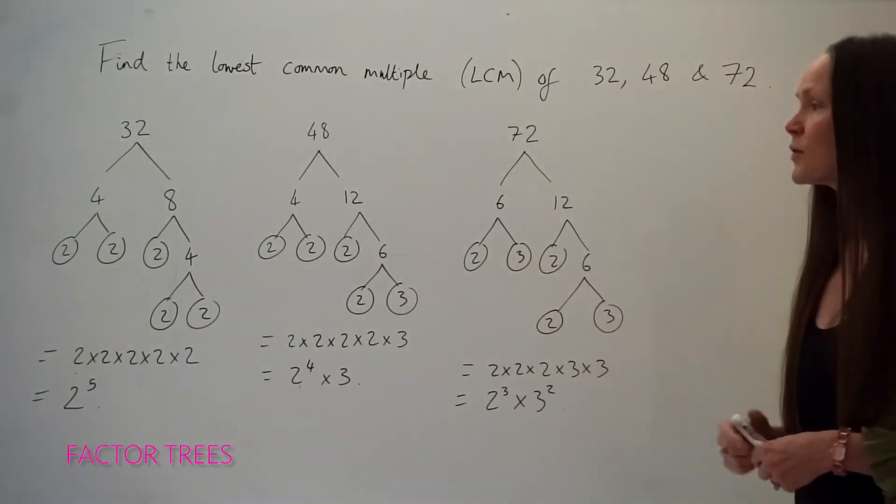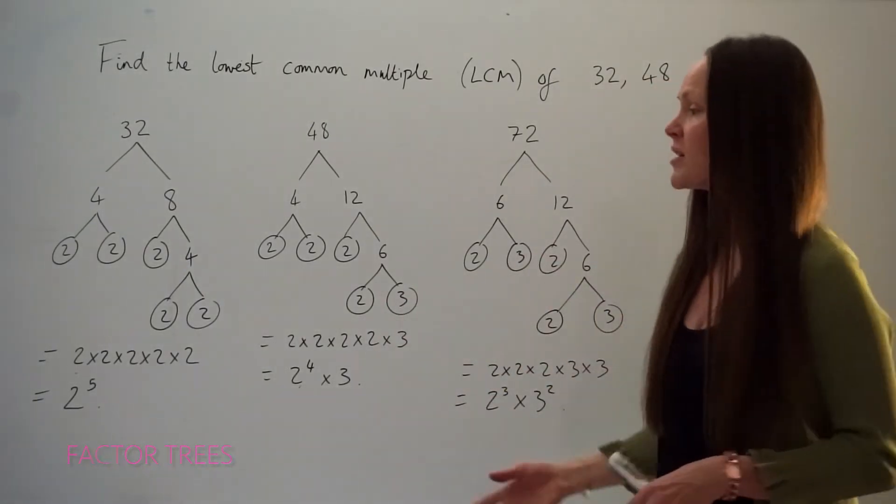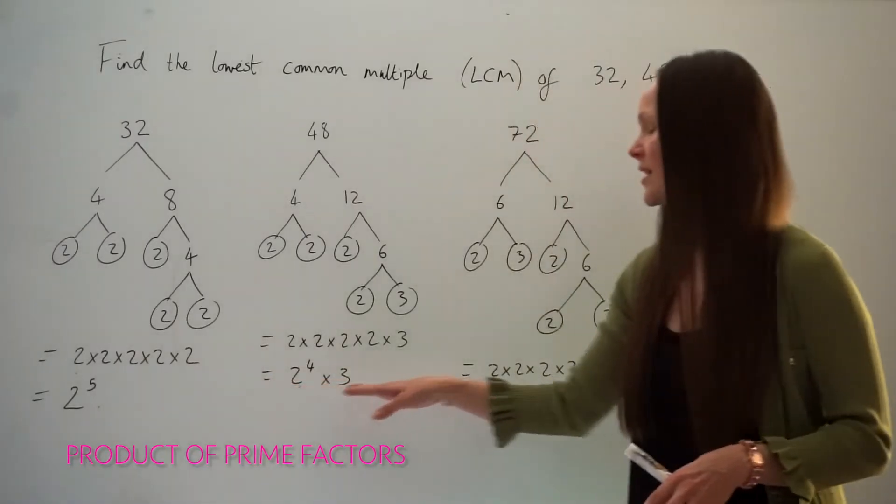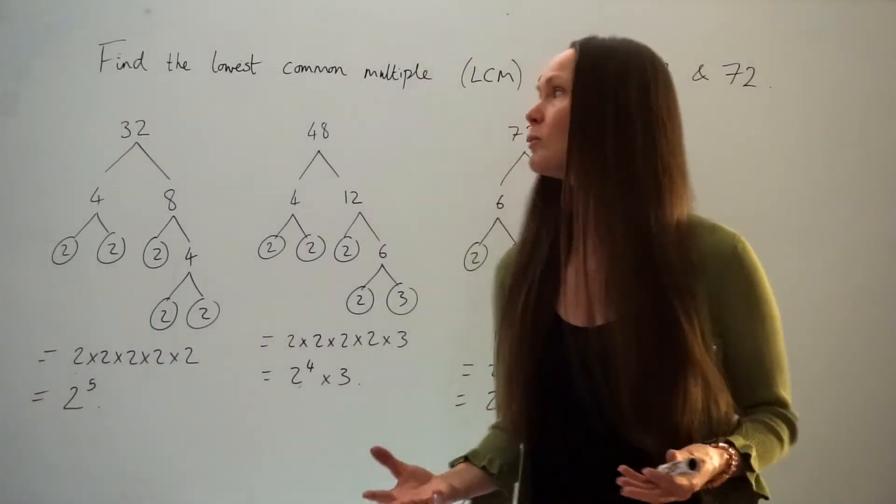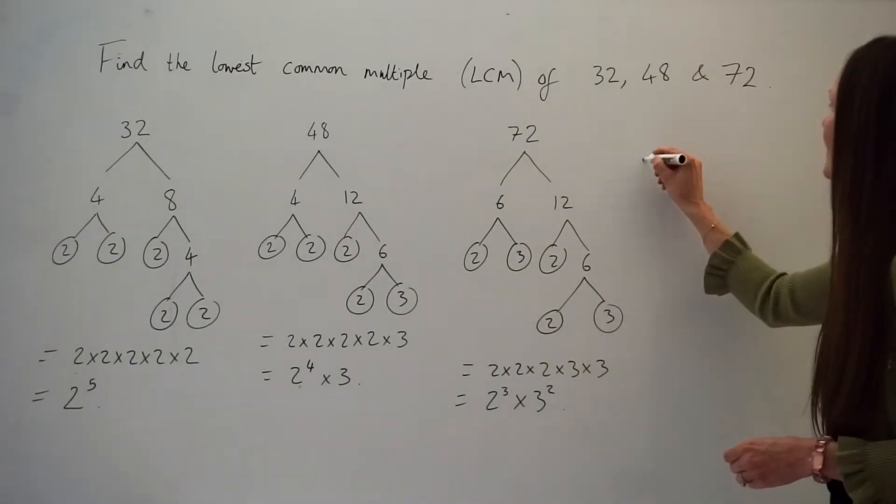So to save time I've written out the three factor trees for those numbers and I've also written them as a product of their prime factors underneath. Okay, so the final step to find the lowest common multiple, remember, is to take the prime factors with the highest powers and multiply them together.